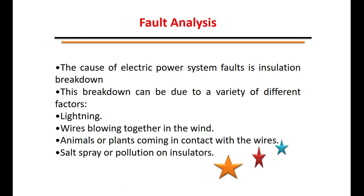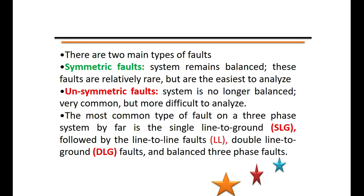Because of these faults, a heavy current will flow. If the fault is balanced in nature, then analysis is made on a per-phase basis. There are mainly two types of faults occurring in the system. One is the symmetrical fault, where the system remains balanced. These faults are relatively rare — only about 5% of faults are symmetrical in nature — but they are the easiest to analyze and can be solved on a per-phase basis.